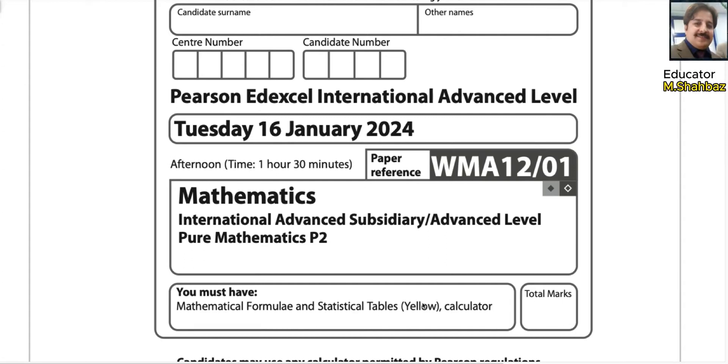Bismillah ar-Rahman ar-Rahim. In the name of Allah, Most Gracious, Most Merciful. Today I will answer for you Pearson Edexcel International A-Level exam. It was taken on 16th of January 2024. It is Pure Math 2. Paper reference code is WMA12-1.